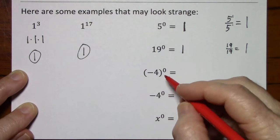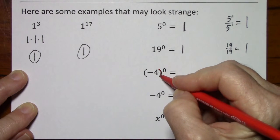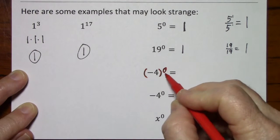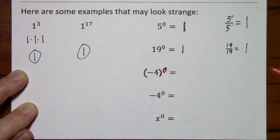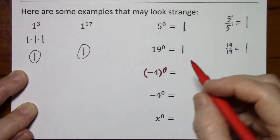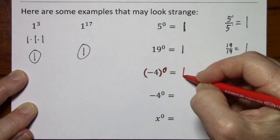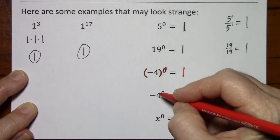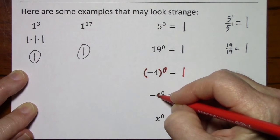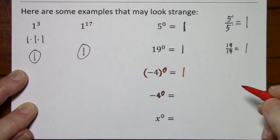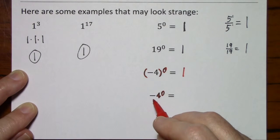When you have a situation like this, here's these parentheses again. The 0 is, I say touching, I mean it's right next to the parentheses. So what's inside the parentheses becomes a 1. In this case, the 0 is touching the 4. It has nothing to do with that negative.